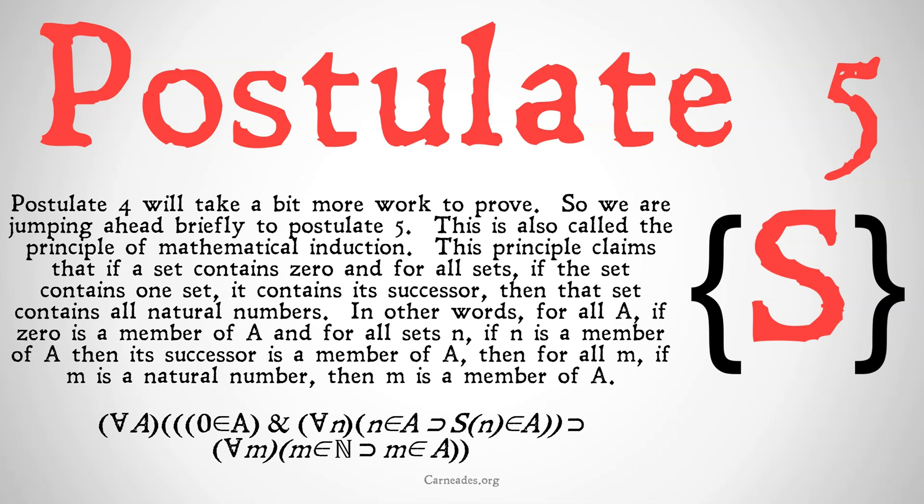This principle claims that if a set contains zero, and for all sets, if that set contains one set it contains its successor, then that set contains all natural numbers. In other words, for all A, if zero is a member of A, and for all sets N, if N is a member of A then its successor is a member of A, then for all M, if M is a natural number, M is a member of A.